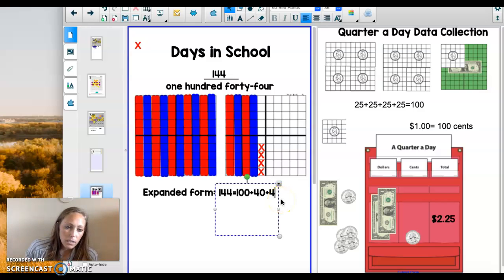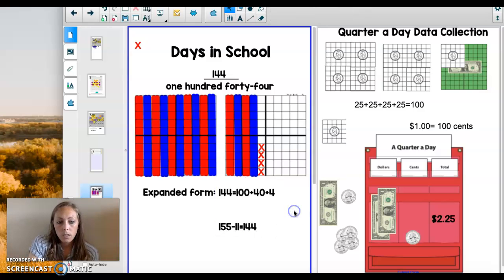Now you need to write two equations that equal 144. One that's adding and one that's subtracting. I'll show you my subtraction equation. 155 minus 11 equals 144. Your turn.